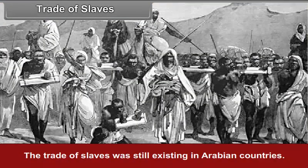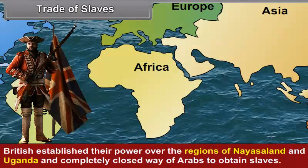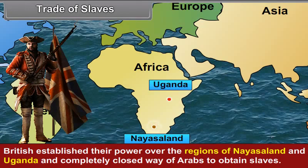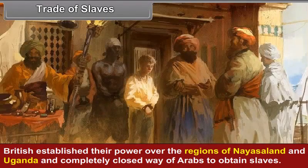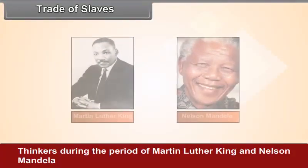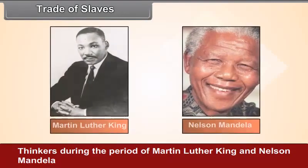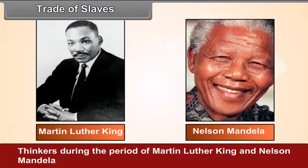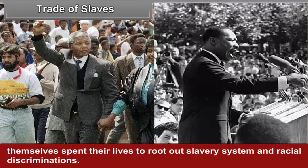The trade of slaves was still existing in Arabian countries. British established their power over the regions of Nyasaland and Uganda and completely closed the way of Arabs to obtain slaves. Thinkers during the period of Martin Luther King and Nelson Mandela themselves spent their lives to root out slavery system and racial discriminations.